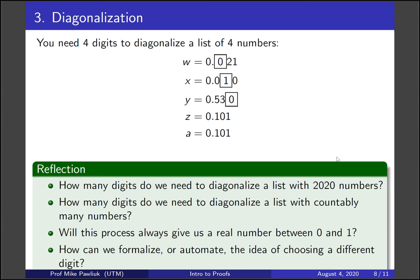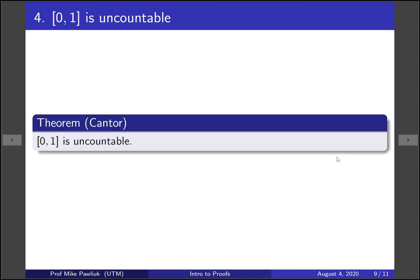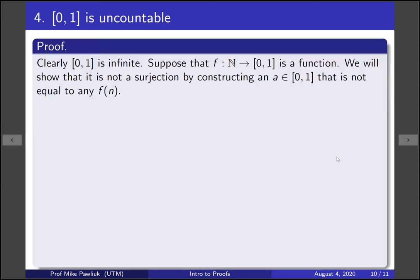Now let's move on to actually proving the thing that we want using diagonalization. Let's prove that [0, 1] is uncountable. This theorem was originally due to the mathematician Cantor. Now clearly the closed interval [0, 1] is infinite, so what we need to show is that it's not countable. So start with a function from the naturals to the closed interval [0, 1], and we're going to show that it's not a surjection, so therefore there's no bijection between the two, because there's no surjection from one to the other. And to show that it's not a surjection, we need to construct a real number a in that interval that's not equal to any of the f(n)'s. Now here we're going to use diagonalization.